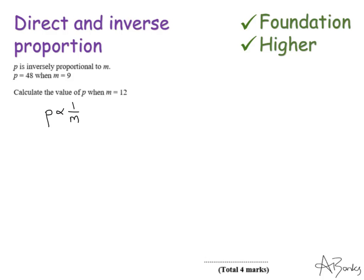So as before, there's going to be some constant connecting these together. So I'm going to write p equals... And I could write k multiplied by 1 over m. But a simpler way of doing this is to have the k on the top of the fraction, which means the same thing. So this is my formula. But as before, I need to find out what this constant actually is. What is this value of k? And they've given me a clue. They've said that when p is 48, m is 9. So I can substitute this in and find the value of k.